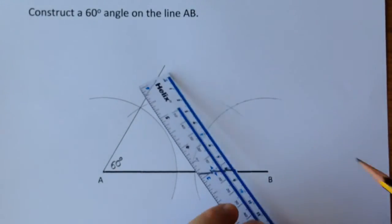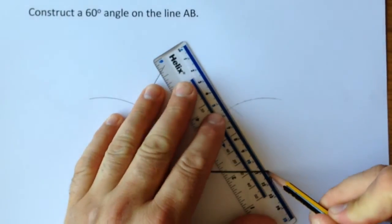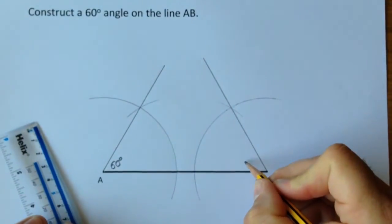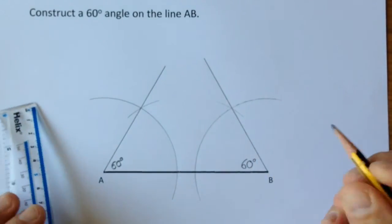Get your ruler and your pencil and draw a line through them. You've now got another 60-degree angle on this end.